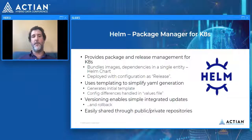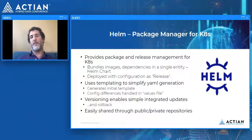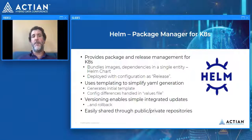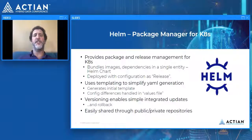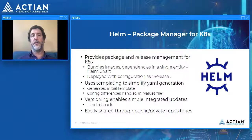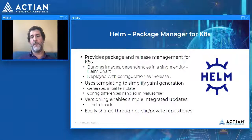Helm also supports versioning — each release you deploy is versioned and tied to specific configuration changes or images. When deploying changes, you simply update the version number and those changes are rolled out. If things go wrong, Helm supports rollback: you make a Helm rollback call and it reverts to the previous version. Finally, you can share Helm charts easily through public and private repositories, which is great for release management — develop incrementally, test a specific release, then push it to production or public repositories.